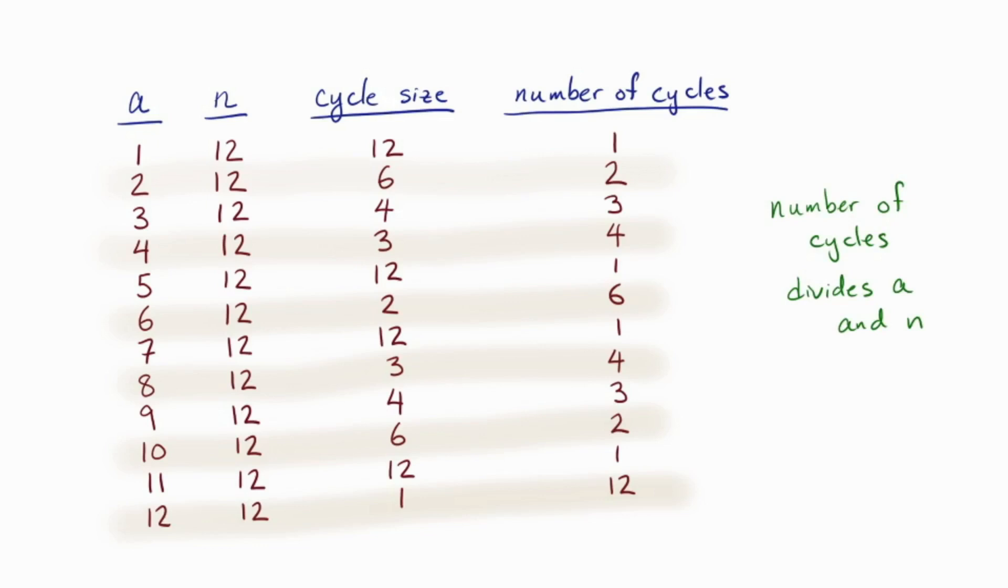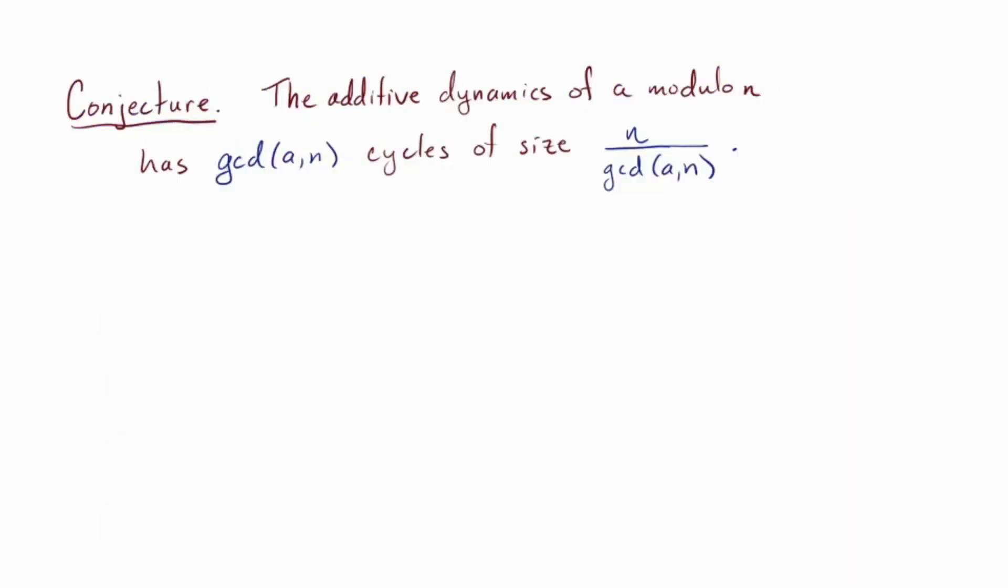So here's an idea. Let's put the GCD of a and n as a column. That's the biggest thing dividing a and n. So we can compare the number of cycles, which divides both a and n, with the GCD, the biggest thing dividing a and n. Okay, look at that. Do you see it? The last two columns seem to agree. So we actually have our conjecture.